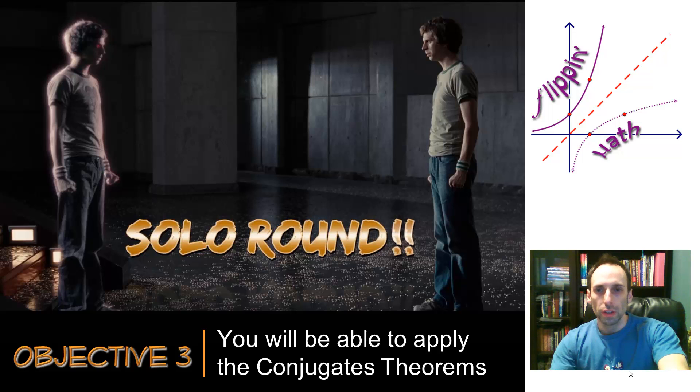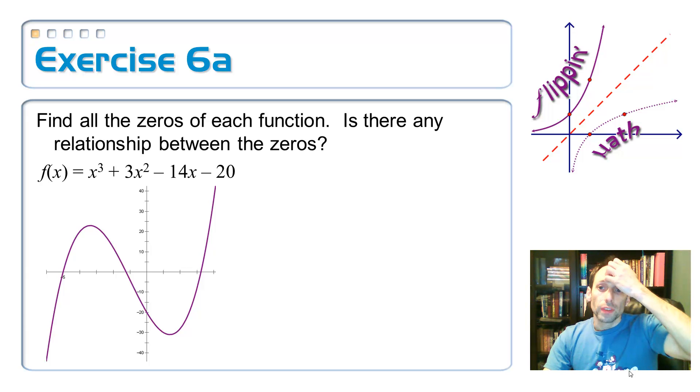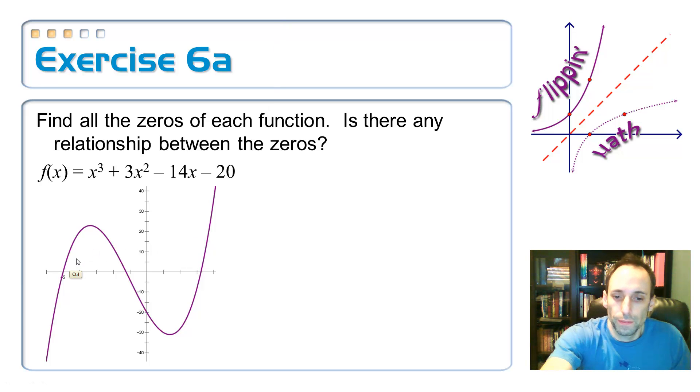So let's take a look at some exercises. So the first one, find all of the zeros of this function. Is there any relationship between the zeros? So if I take a look at this, I know that I got directly off of the graph, I've got negative 5. Now it seems very common. I keep picking negative 5. So negative 5. Let's divide that thing out.